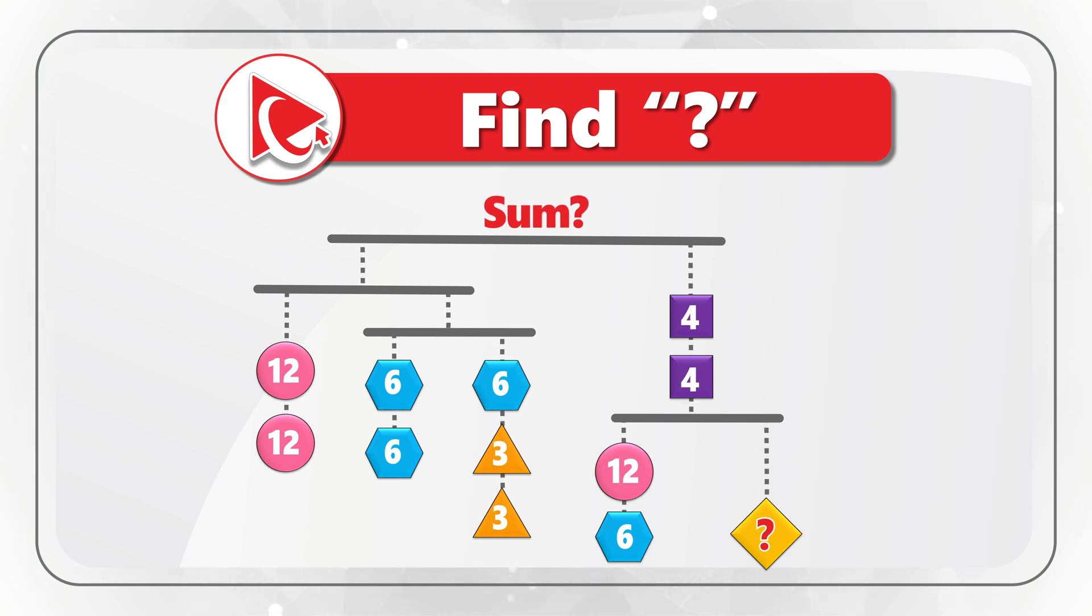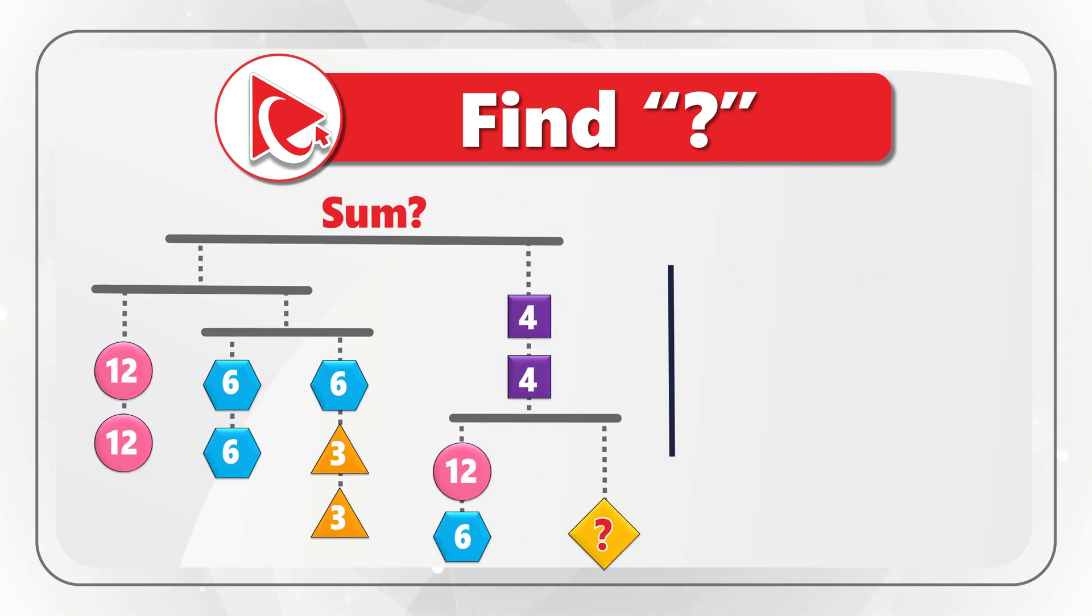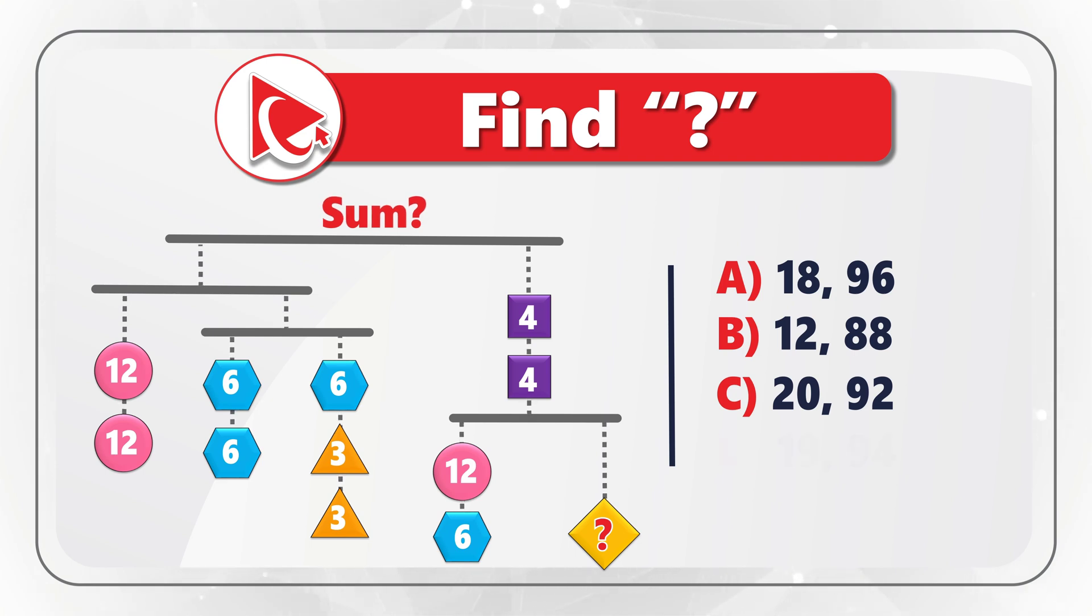And once you've done with your calculations, you need to select out of four possible choices. Choice A values 18 and 96. Choice B values 12 and 88. Choice C values 20 and 92. And last but not least, choice D values 19 and 94.